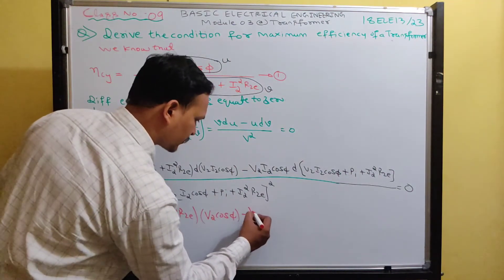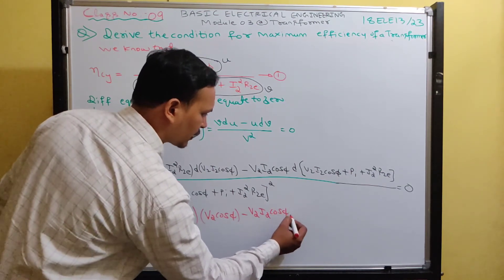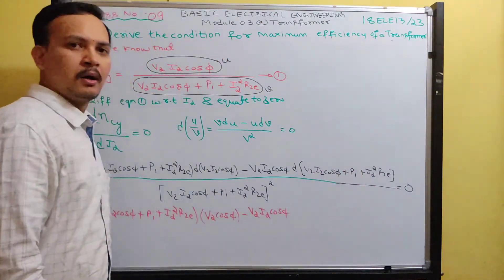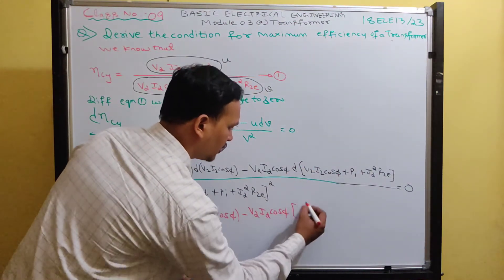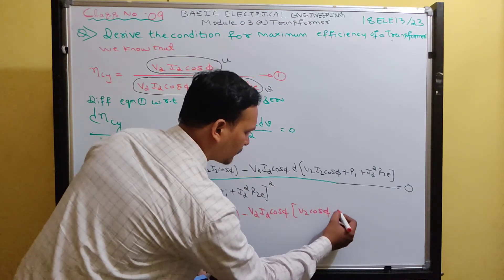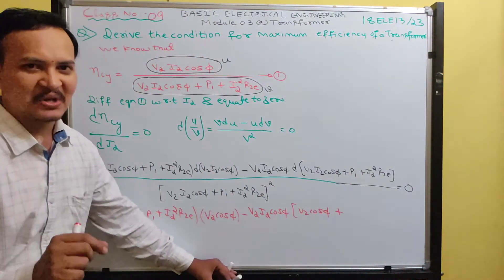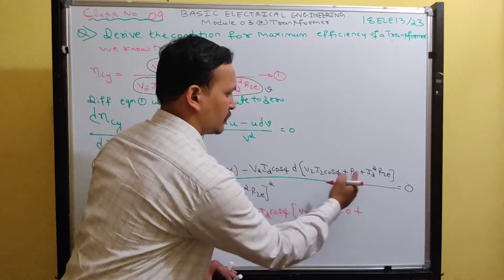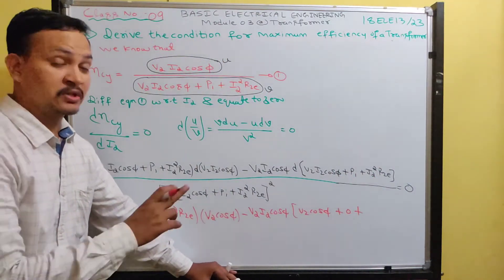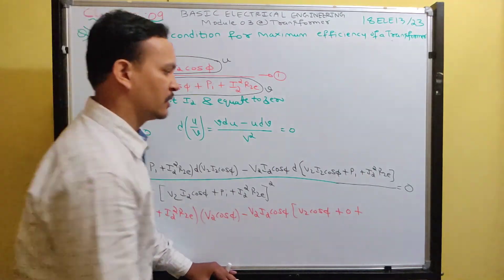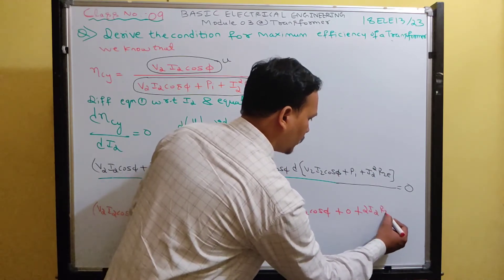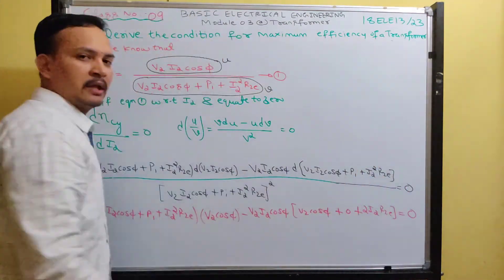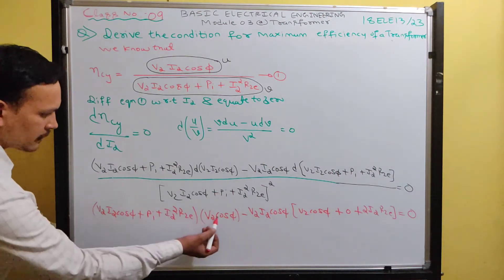So after differentiating, the denominator multiplied across cancels and we set the numerator equal to zero: (V2·I2·cos φ + Pi + I2²·R2e)·(V2·cos φ) minus (V2·I2·cos φ)·(V2·cos φ + 0 + 2·I2·R2e) = 0.